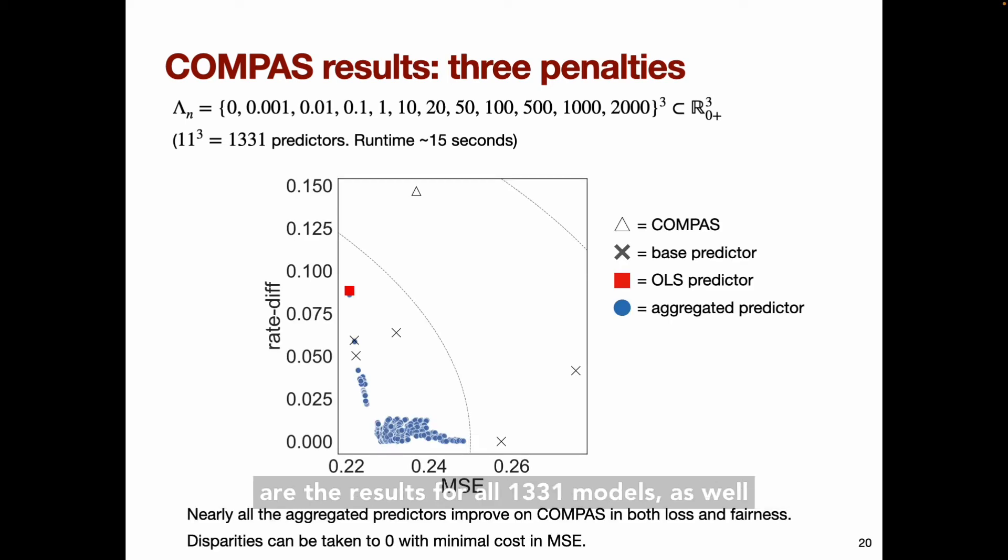Here are the results for all 1,331 models as well as the basis predictors. The x-axis is the mean squared error. The y-axis is the rate difference. The triangle at the top represents COMPAS. The gray x's represent the base predictors. The red square represents the unpenalized least squares predictor. Each blue circle represents an aggregated FADE predictor.